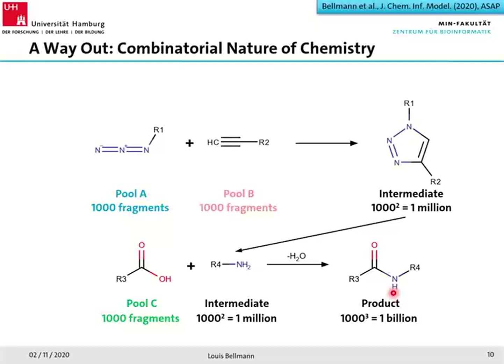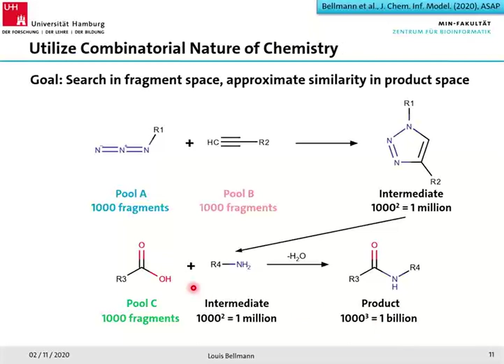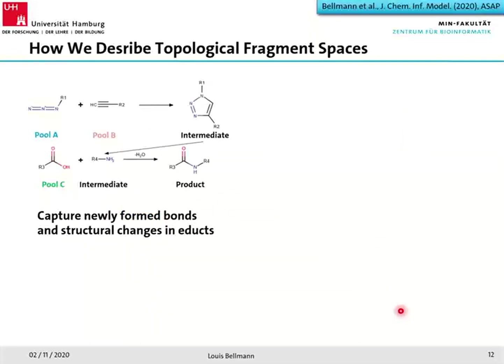Our goal is to search in the fragment space — in this case three thousand fragments — while approximating the similarity in the product space of a billion products, without actually enumerating all those products. How do we do this? We have to gather all the information from the reaction scheme.